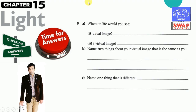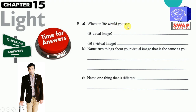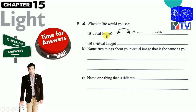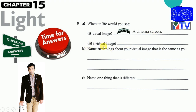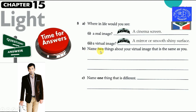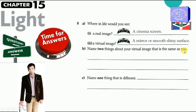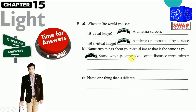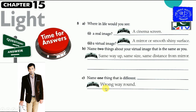Question eight, A part: where in life would you see a real image? Answer: a cinema screen. Where would you see a virtual image? The B part: how is the image the same as you? Answer: same way up, same size, same distance from the mirror. The C part: name one thing that is different. Answer: wrong way round.